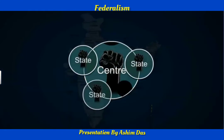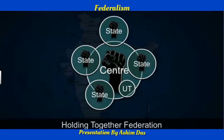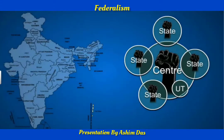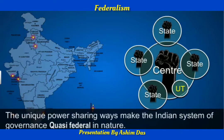The Indian Union is based on the ideology of the holding together federation, whereby power is divided between the respective states and the central government. However, this power sharing can vary across different units of the federation. For example, Jammu and Kashmir enjoys more power than other states, while union territories are virtually dependent on the center. These unique power-sharing arrangements make the Indian system of government quasi-federal in nature.